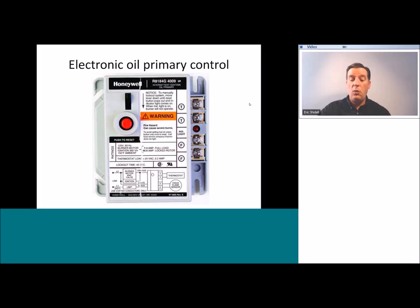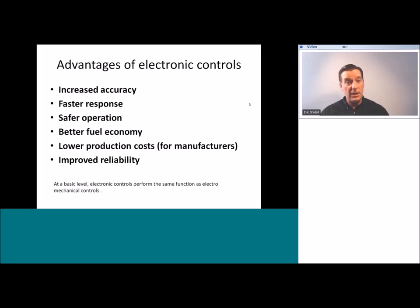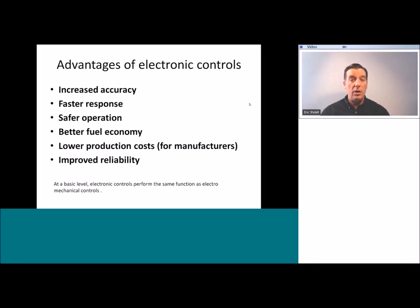The advantages of electronic controls — why we got here — include increased accuracy, faster safety response, safer operation, better fuel economy, lower production costs for manufacturers, and improved reliability. But at a basic level, all these controls perform the same basic function as the electromechanicals they replaced. So knowing the history and the sequence of operations of a particular piece of machinery is incredibly important to understanding what your electronic circuit boards do — because they basically do the same thing the old things did, just with some additional features responding to a series of set conditions and providing a response.